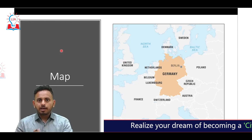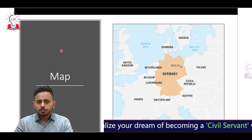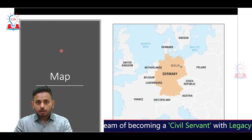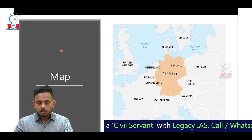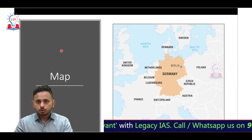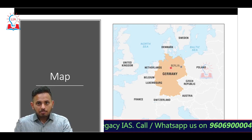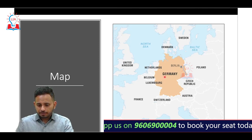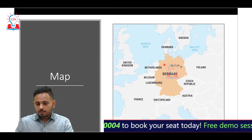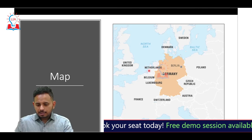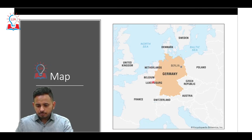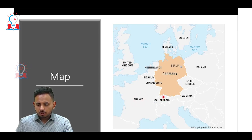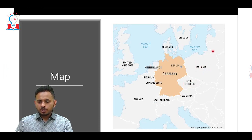Before we begin, if there is a question in the UPSC Prelims about the location of Germany or any other European country, this map will help you answer correctly. You can see Germany here — its capital city is Berlin, and it is bordered by countries like Netherlands, Belgium, Luxembourg, France, Switzerland, Austria, Czech Republic, and Poland.